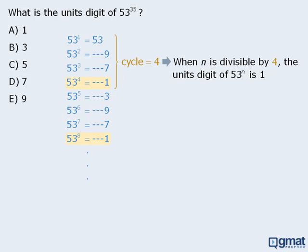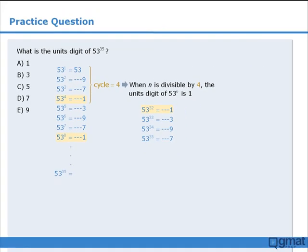Now how can we use this to help us find the unit's digit of 53 to the power of 35? Let's examine the power of 53 less than 53 to the power of 35 where the exponent is still divisible by 4. Since 32 is divisible by 4, we know that the unit's digit of 53 to the power of 32 will be 1. From here we can continue our pattern to see that the unit's digit of 53 to the power of 33 is 3, the unit's digit of 53 to the power of 34 is 9, and the unit's digit of 53 to the power of 35 is 7. As such, the answer here must be D.